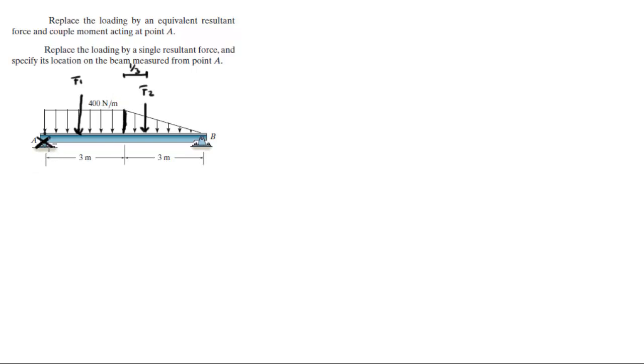Now let's find some distances. You know that F1 is being applied at half the rectangle that will make it 1.5 meters. You know that F2 is being applied one third from the tall edge of the triangle that will be 3 which is the length of the rectangle plus one third of the triangle which will be 4 meters.